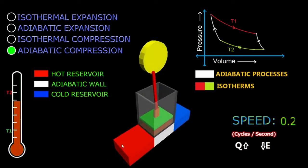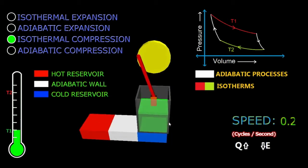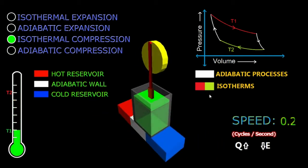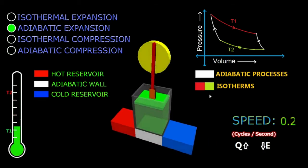Below that you can see a thermometer which indicates the temperature of the working substance inside the cylinder. The temperature keeps changing and the thermometer will indicate the temperature at any instant.